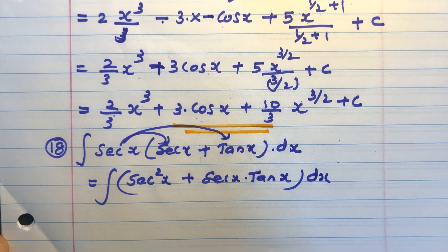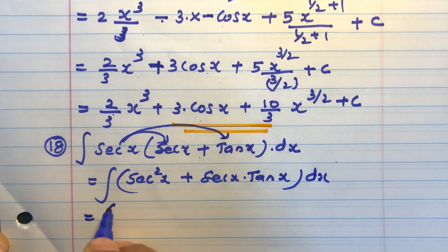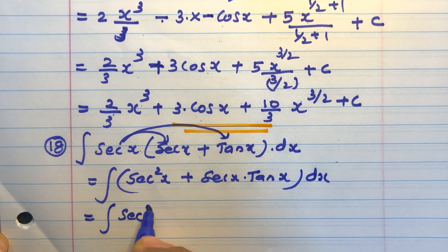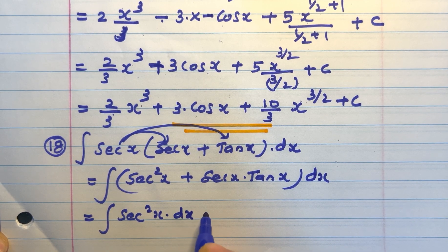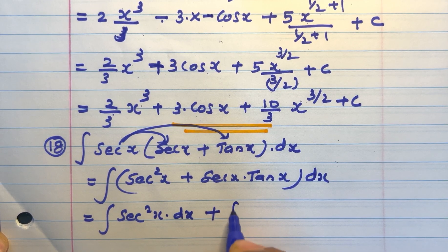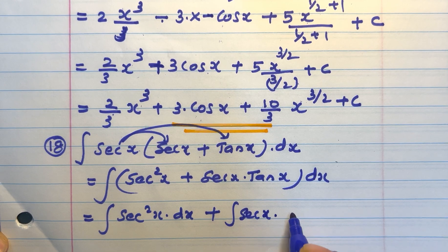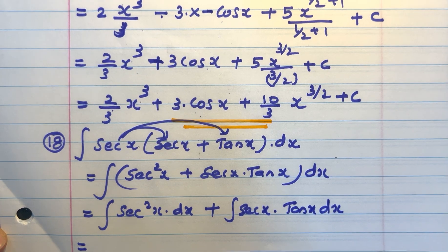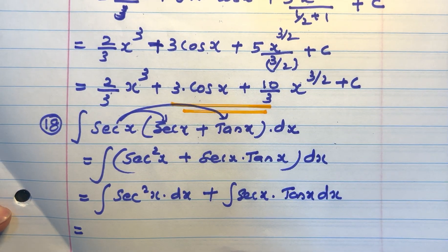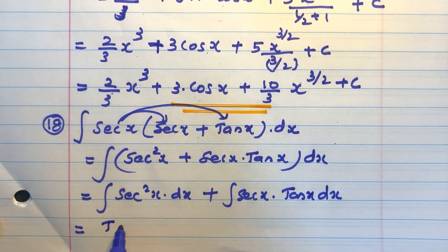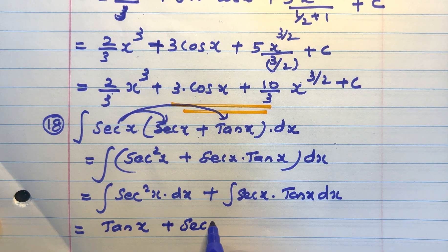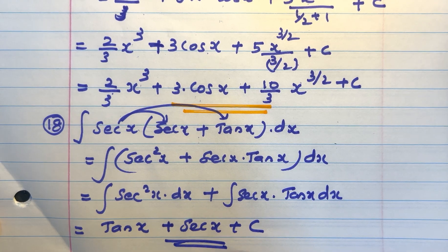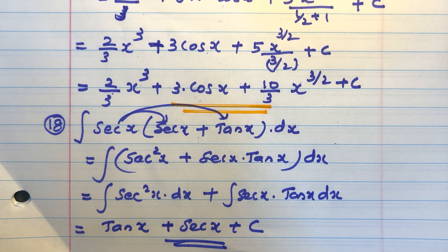Separate the integration. That is equal to integral sec squared x dx plus integral secx tanx dx. That is equal to, using direct formulas, integral sec squared x is tanx, and integral secx tanx is secx, plus c. So the answer is tanx plus secx plus c.